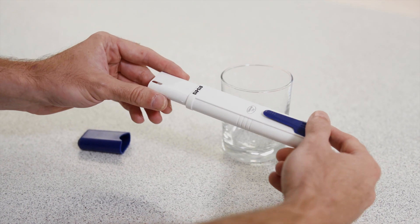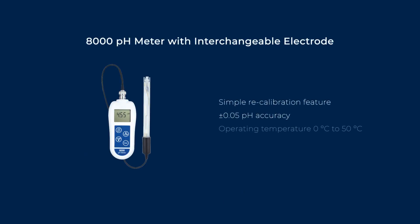With a pocket tester like the pH-PAL, the whole instrument needs to be replaced. So for many businesses, it can be more cost-effective to use a pH meter with switchable electrodes like the 8000 pH meter.